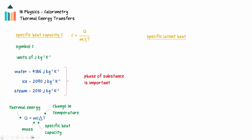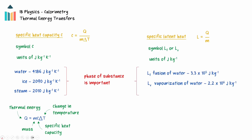The specific latent heats of fusion and vaporization of a substance are the energy needed to change the phase of one kilogram of the material at its melting or boiling point respectively. It has the symbol capital L and units of joules per kilogram. The formula q equals mL relates the energy q required to change the phase of a mass m of a substance with a specific latent heat L.